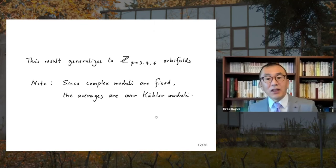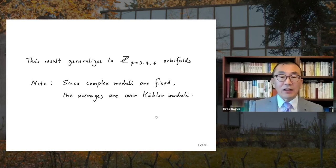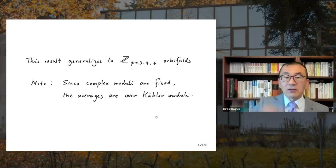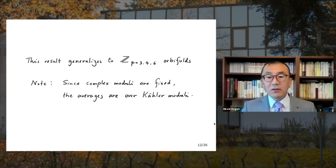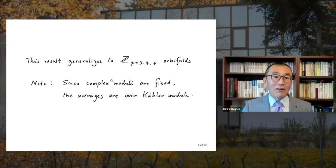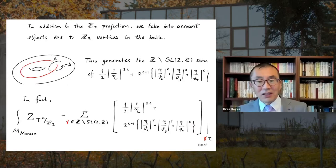We found that this generalizes to other orbifolds, but in some cases we do not average over the entire Narain moduli because some moduli directions get frozen — for example in the case of Z3, Z4, Z6. If you pick a particular point in Narain moduli space, some directions correspond to Kähler deformation and some to complex structure deformation. For these orbifolds, the complex moduli directions get frozen, so you average only over the Kähler direction. Interestingly, if you do this correct averaging, something like this again works perfectly. Gauging the ZP symmetry gives Chern-Simons theory with a ZP projection.